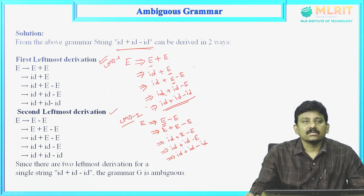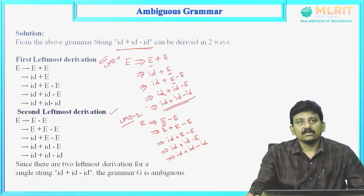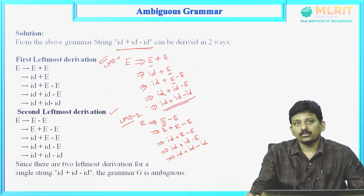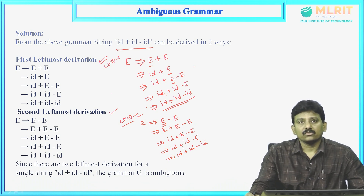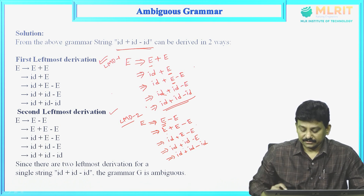Like that, we have to prove that for the given string, if you construct two leftmost derivations or two rightmost derivations or two parse trees, you can declare that the given CFG is ambiguous grammar.